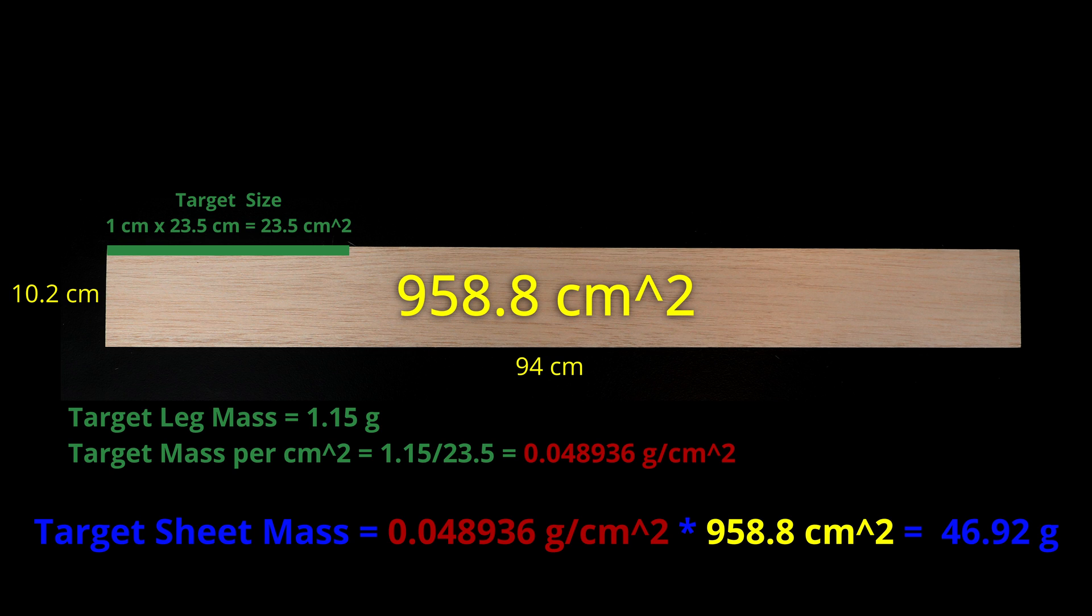So all we need to do is pick the sheet closest to 46.92 grams and cut 4 legs that are 1 centimeter by 23.5 centimeters, right?